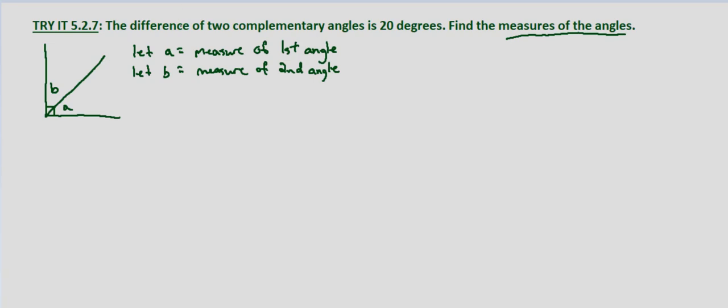So we know that the angles are complementary. What does that mean? That means A plus B equals 90 degrees.